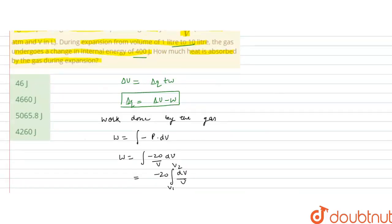That will be delta U minus W, and delta U is given 400 joules, and that will be minus of minus 4667.02. So, it will be 400 plus 4667.02, so this will be equal to 5067.02, joules of heat energy that is absorbed by the gas during the expansion.